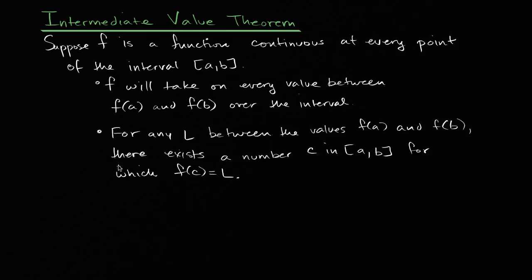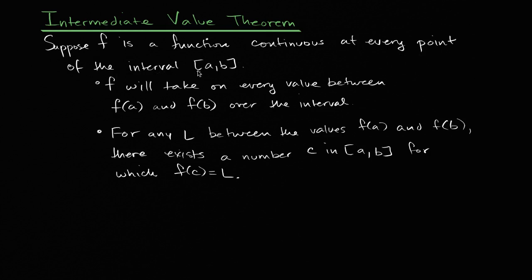I'm not going to prove it here, but I think the conceptual underpinning should be straightforward. So the theorem tells us that suppose f is a function continuous at every point of the closed interval — so we're including a and b — continuous at every point of the interval [a, b].